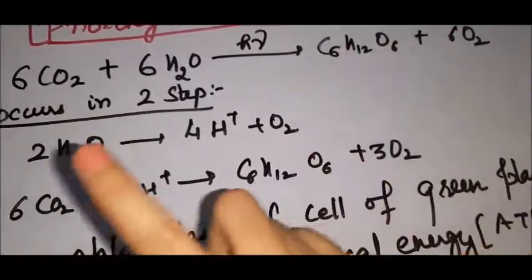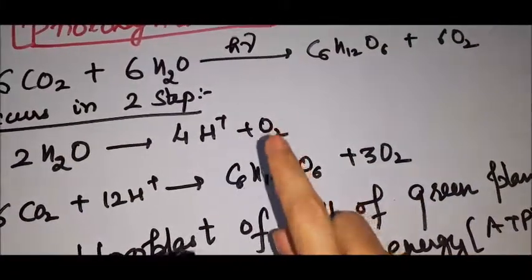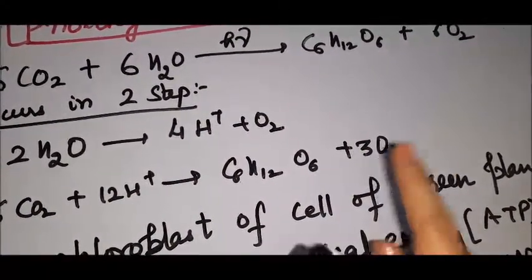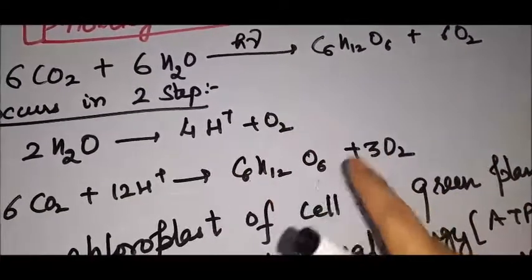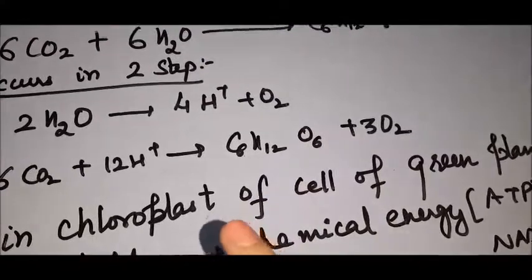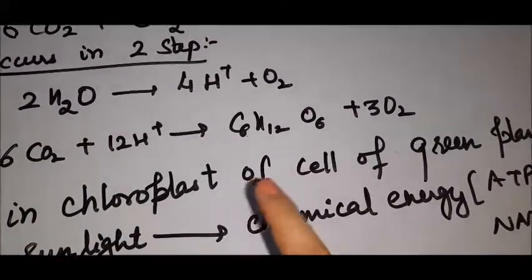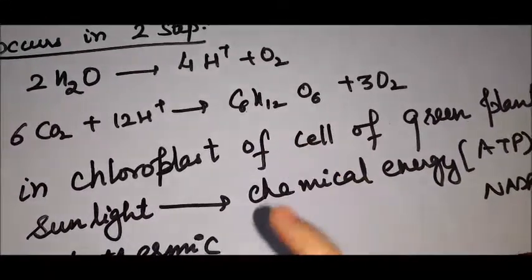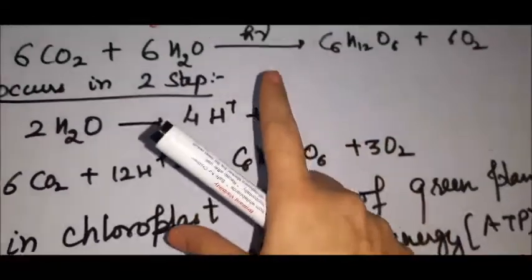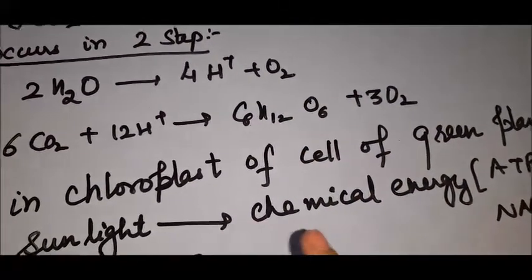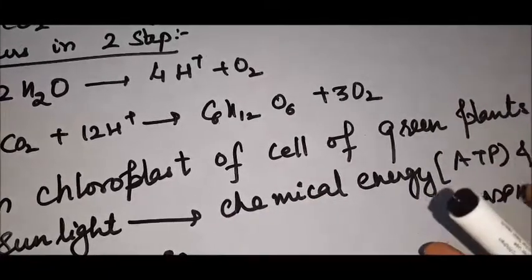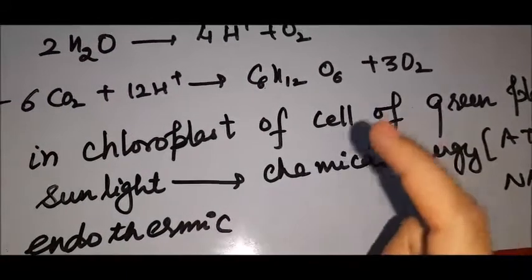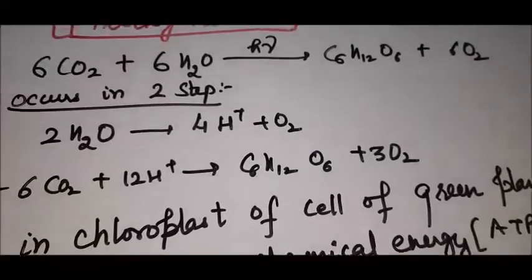Photosynthesis occurs in two steps. First, water is broken into H⁺ and O2. Second, CO2 is fixed using H⁺ to produce carbohydrates. The reaction occurs in the chloroplasts of green plant cells. It uses sunlight and stores chemical energy in the form of ATP and NADPH. An important point: this reaction is endothermic.